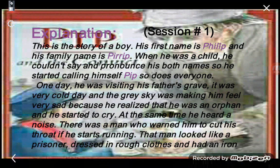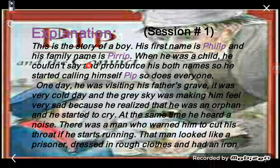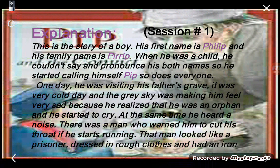Here is the explanation of this unit with morals, so listen carefully. This is the story of a boy. His first name is Philip and his family name is Philip. When he was a child, he couldn't pronounce both names, so he started calling himself Pip.